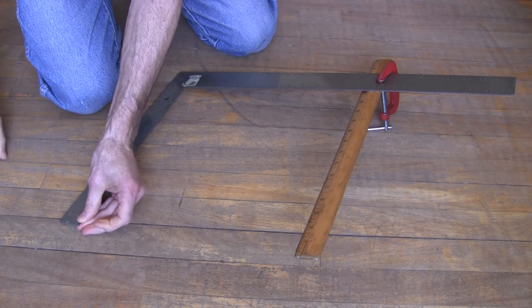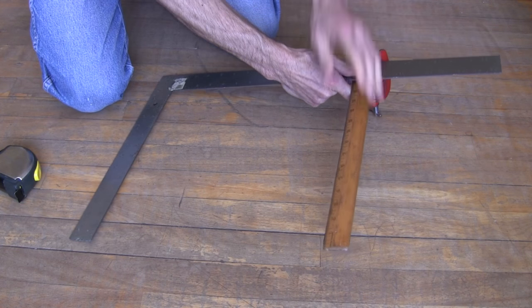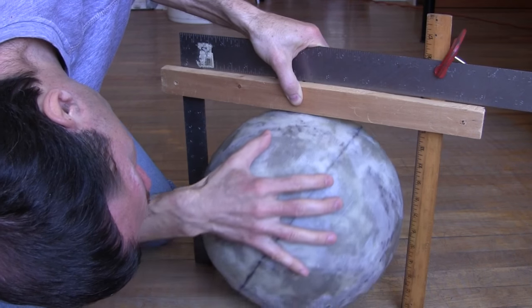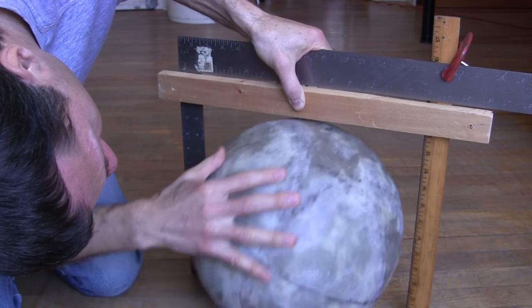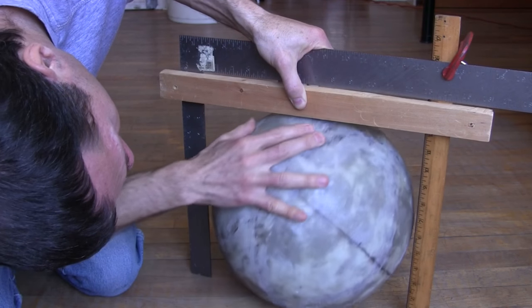Next I need to find out the new outer diameter. For that I clamp a ruler to my square. I then hold a stick across that, while rolling the ball under it. Most places it's around 12 and 1 eighth inches. But in a few places near the poles, it's around 12 and 1 quarter inches.